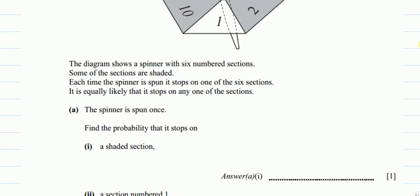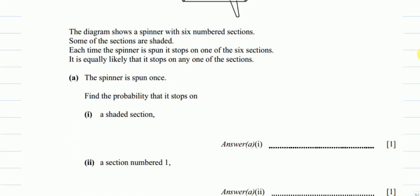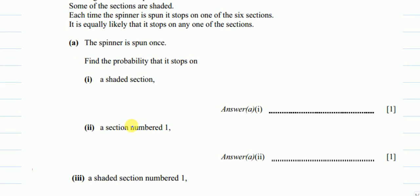Part A: The spinner is spun once. Find the probability that it stops on a shaded section. We have to see how many shaded sections we have out of the total six sections. We have four shaded sections, so it will be four shaded sections out of the total six sections.